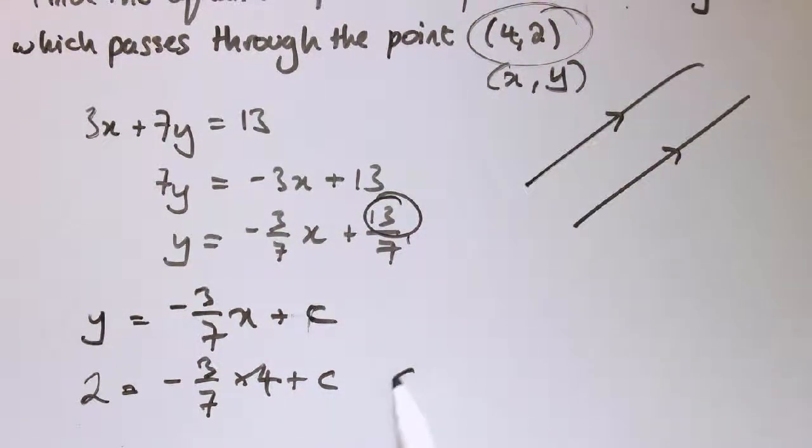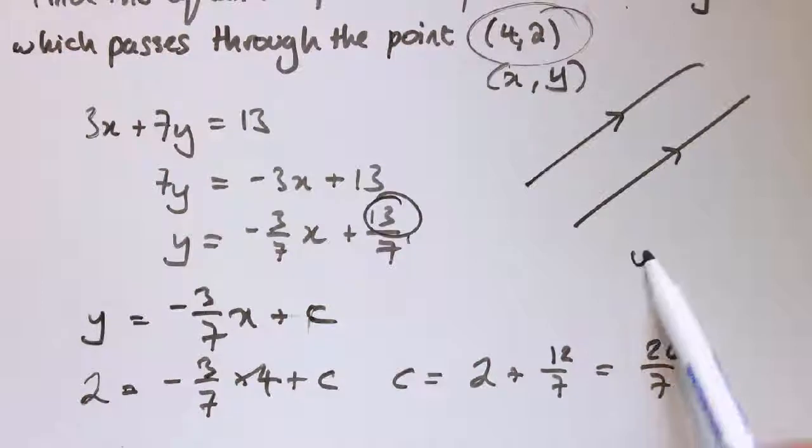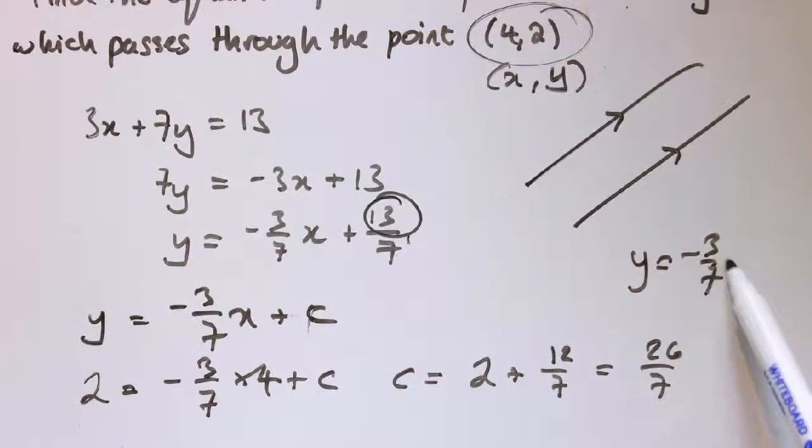Then rearranging this, c is going to be 2 plus 12/7, which is 26 over 7. So the answer I'm looking for is y equals minus 3/7 x plus 26 over 7.